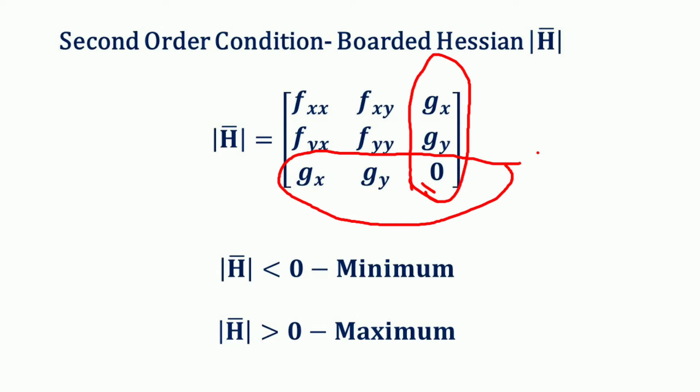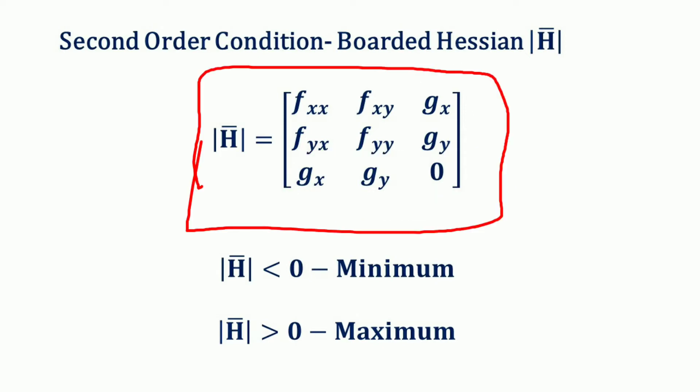So the Bordered Hessian matrix is: | f_xx  f_xy  g_x | | f_yx  f_yy  g_y | | g_x   g_y   0  |. This is the Bordered Hessian.